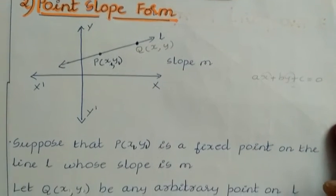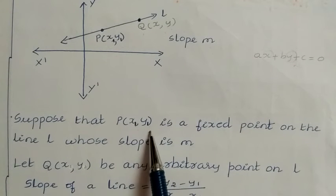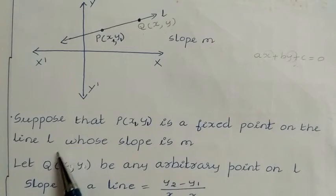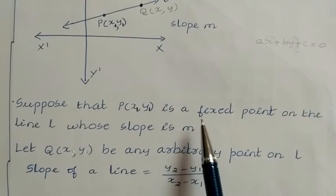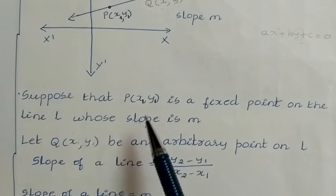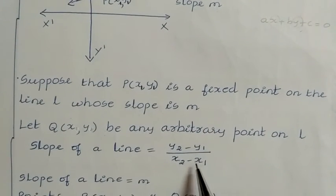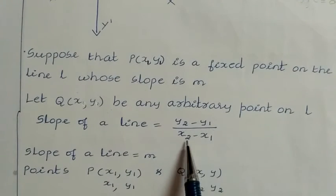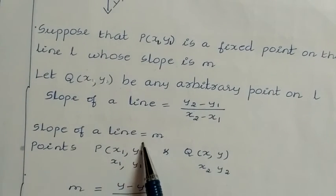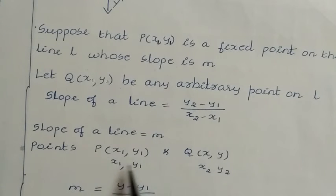We have point P with coordinates (x1, y1) and slope m for line L. We have also considered point Q on the same line with coordinates (x, y), which is an arbitrary point whose value can be anything. To find the slope of the line, the formula is (y2 − y1) divided by (x2 − x1). We already know the slope of the line is m, and the points are P(x1, y1) and Q(x, y).